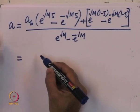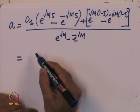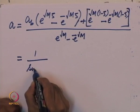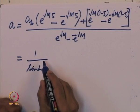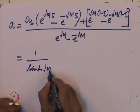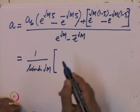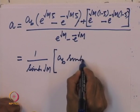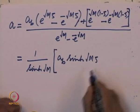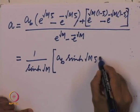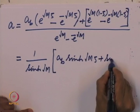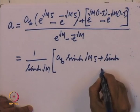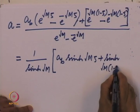After algebraic manipulation, C₂ = (e^√M − A_B) / (e^√M − e^(−√M)). Substituting C₁ and C₂ into the general solution and writing in terms of hyperbolic functions, the concentration profile is: a = [A_B · sinh(√M · ζ) + sinh(√M · (1−ζ))] / sinh(√M).